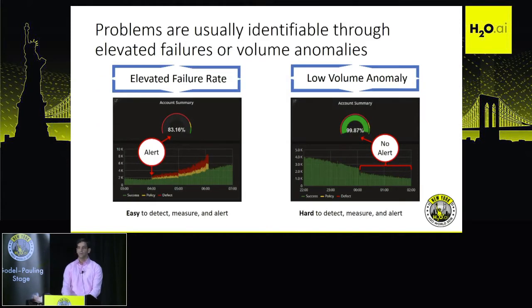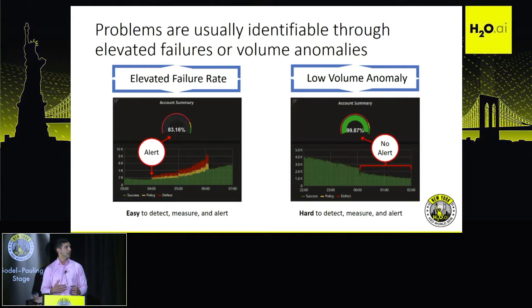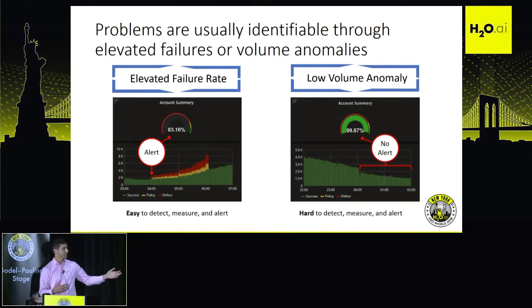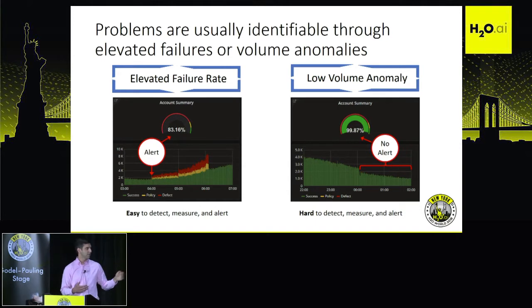When we're looking at transactions, there are two main places you'll see failures. On the left, you'll see elevated failure rates. Those are very easy to detect, very easy to measure — you can alert on them. You can see in this diagram a large spike in failures, and you can set thresholds on that fairly easily.